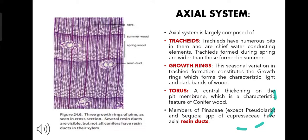Axial system. The axial system is chiefly composed of tracheids, growth rings, torus, and sometimes resin ducts. The tracheids are the chief water-conducting elements of the xylem and they have numerous pits. There is a central thickening on the pit membrane, which is a characteristic feature of conifer wood, and this is termed as torus. The tracheids formed during spring versus the summer season constitute the growth rings, which form the light and dark bands of the wood.